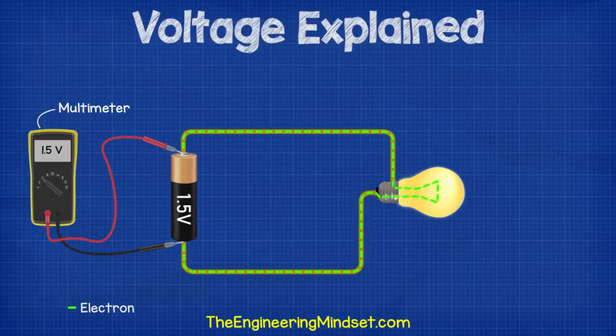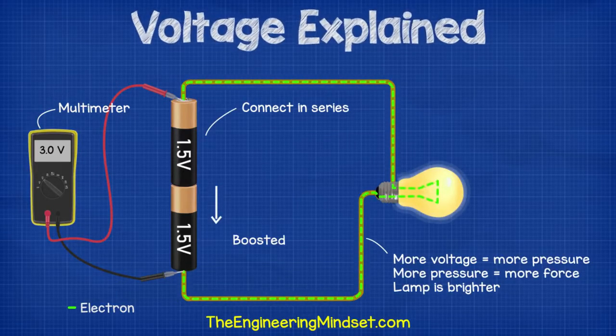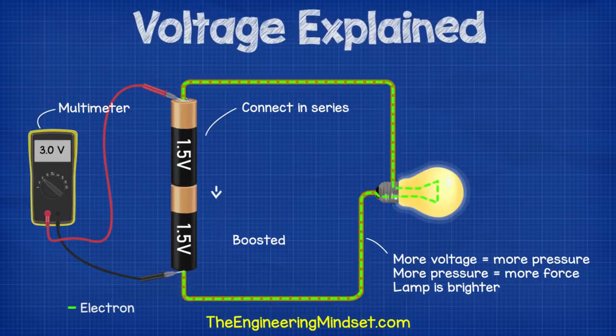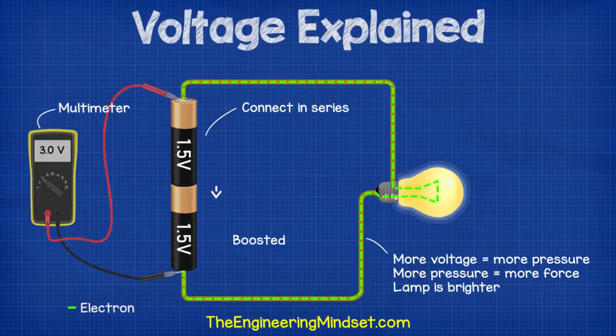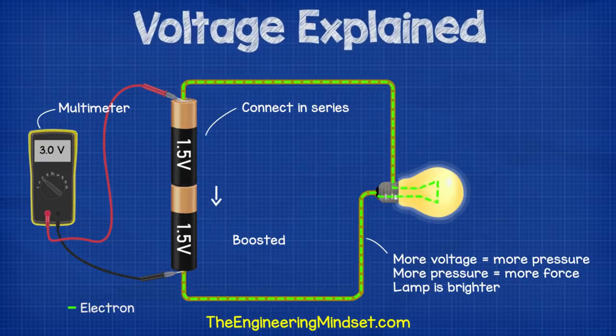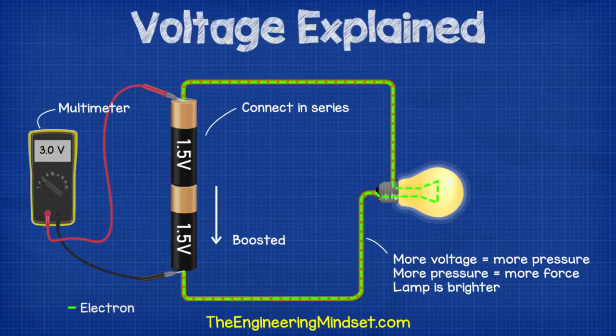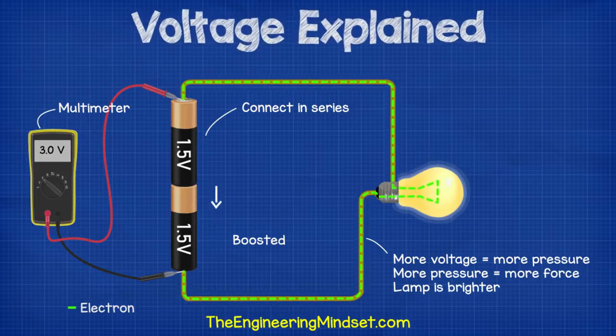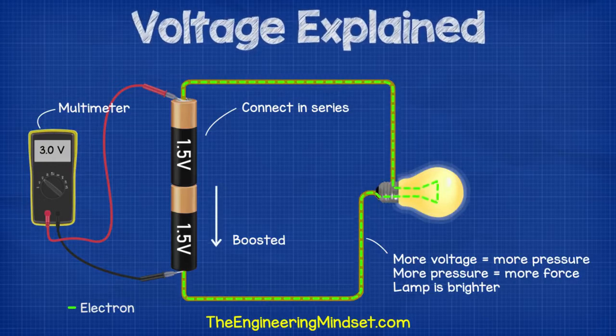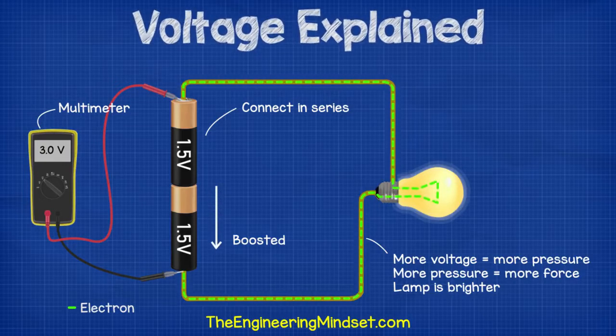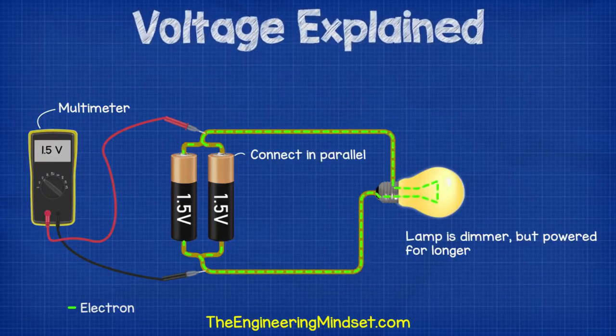If we then add another battery to the circuit in series with the previous battery, the electrons will effectively be pushed by the second battery. There is more energy being added. This will combine the voltage, so we get 3 volts. More volts equals more pressure, which means more pushing force. More electrons will flow, and the lamp will glow brighter.